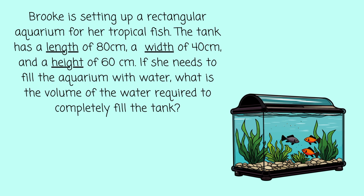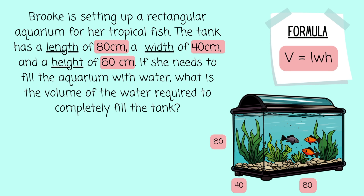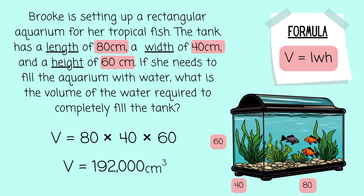First I'm going to look at the length, width, and height, and highlight those measurements. So I have 80 centimeters, 40 centimeters, and 60 centimeters — that's my length, my width, and my height. Now I'm just going to follow the formula and multiply length times width times height: 80 times 40 times 60, which gives me 192,000 centimeters cubed.